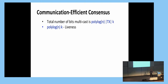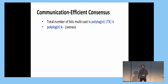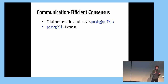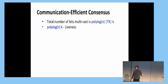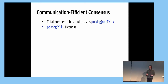By communication-efficient consensus, we would like a consensus protocol satisfying two properties. First, the total number of bits that players multicast should be polylogarithmic in the number of players, the total length of the transactions, and the security parameter. Additionally, we require liveness — whenever somebody would like to add a transaction, it should get confirmed within polylogarithmic time. So both communication complexity and liveness should be polylogarithmic in the number of players.